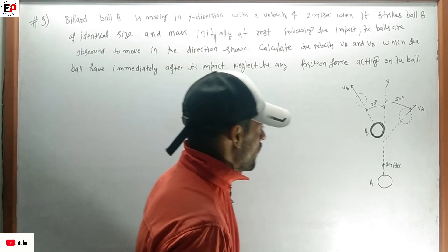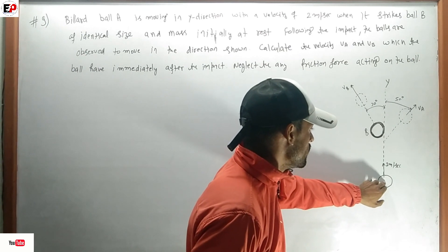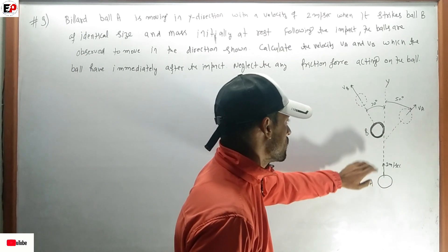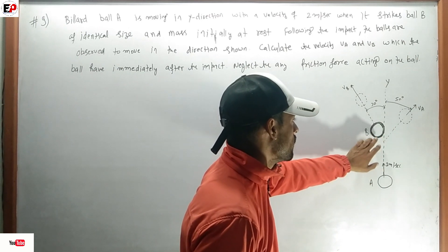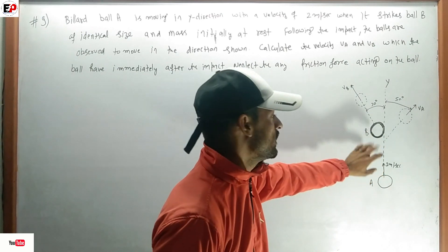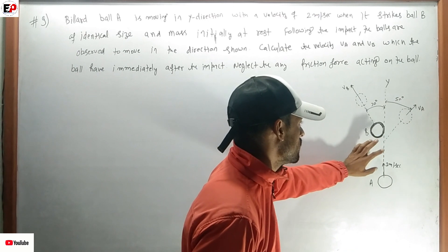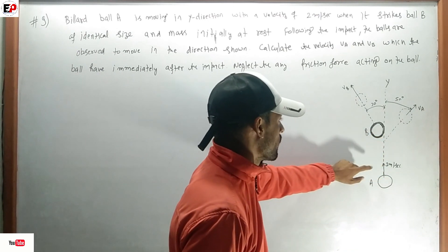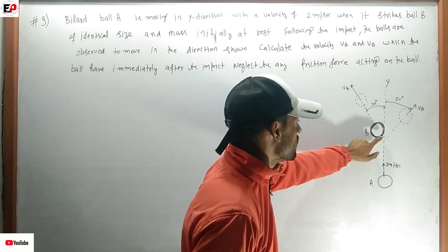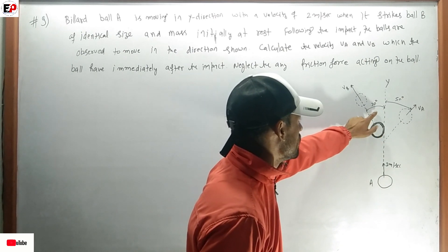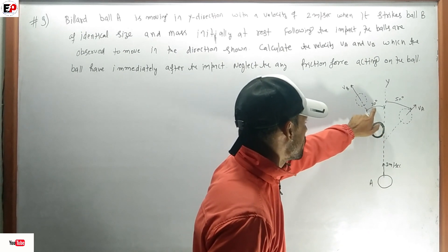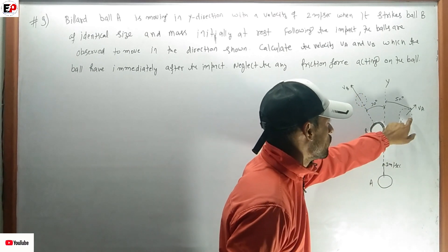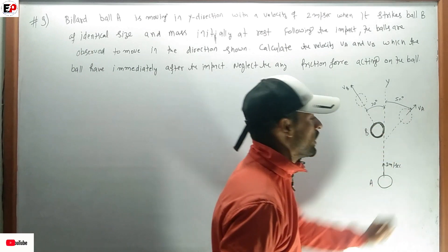This is what is given. Ball A has an initial velocity of 2 meters per second in the Y direction and hits ball B. The masses are identical — mass of A equals mass of B. Ball B moves at a 30-degree angle and ball A moves at a 50-degree angle after the impact.